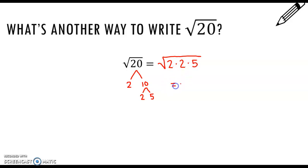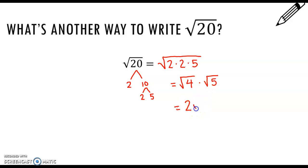2 times 2 is 4, so the square root of 20 is the same as the square root of 4 times the square root of 5. The square root of 4 is 2, and we can't simplify the square root of 5, so we write it as the square root of 5. That means 2 times the square root of 5 is the same thing as the square root of 20.